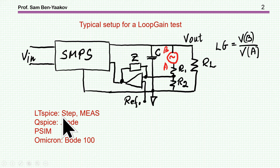You can do it by simulation. LTSpice can use step and measure and get the algorithm going to get the transfer function. Qspice has a directive body. P-SIM has a built-in procedure for that, and of course you can do it by hardware. For example, Omicron's Bode 100 will let you inject into a real system, a physical system, this signal and get this ratio by network analyzer or frequency response analyzer.